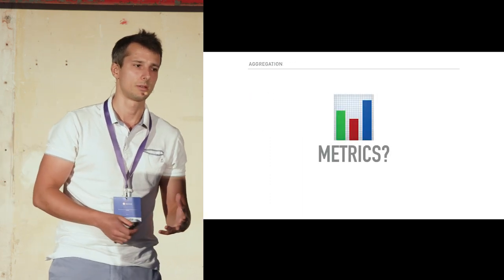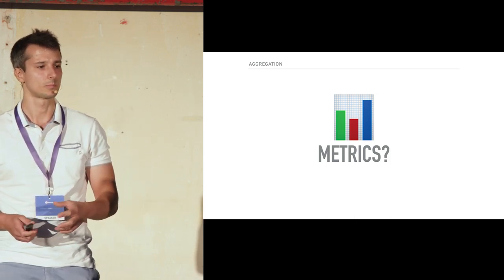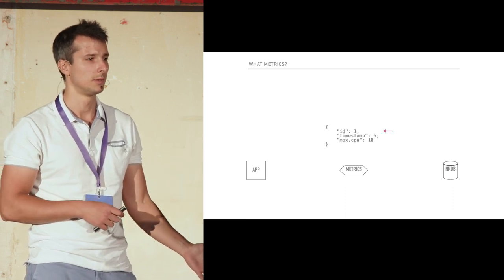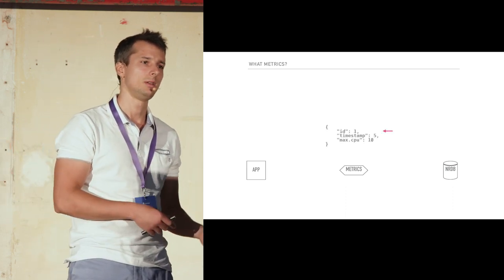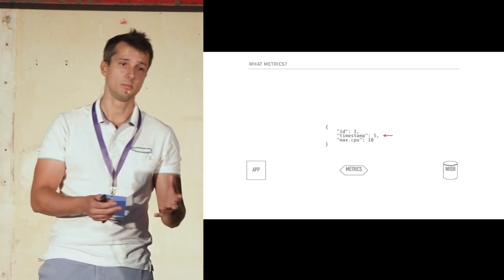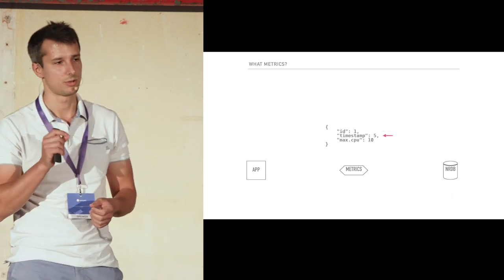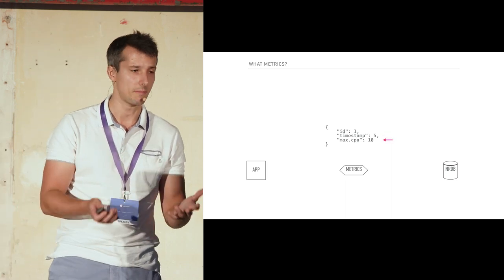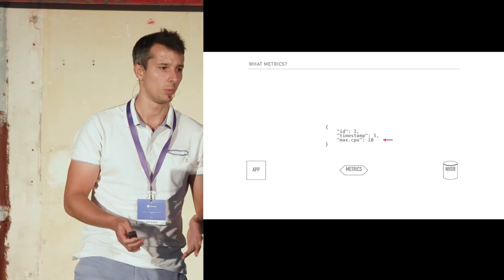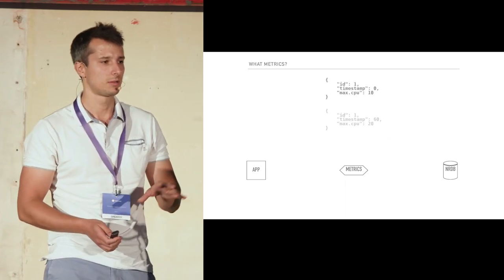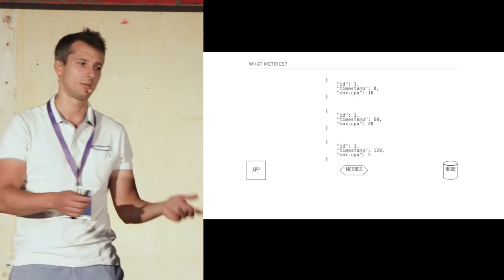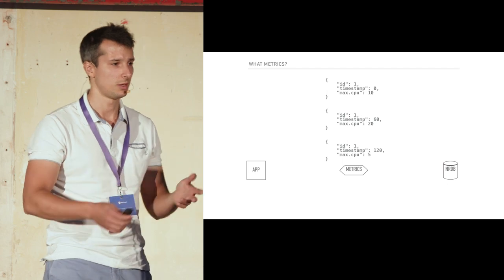When we say metrics, what we mean is: you have your entity — it could be an EC2 instance — and it would have a timestamp, basically meaning we took the measurement at this point in time. And it's going to be some metric — it can be CPU, number of partitions, memory, what have you. These metrics are arriving over time, one by one, with some resolution, and we send them towards NRTDB.